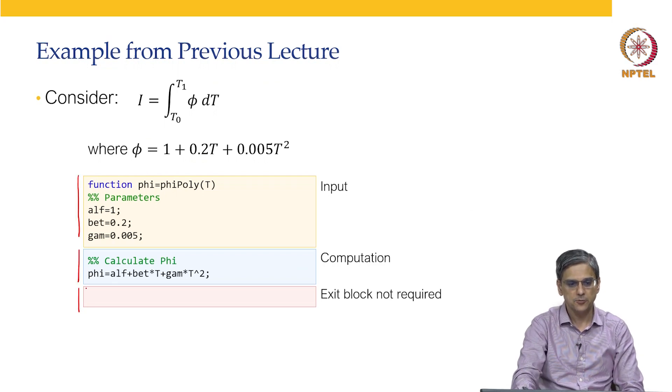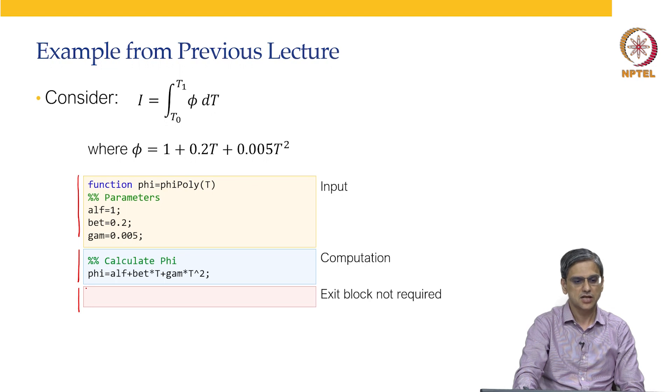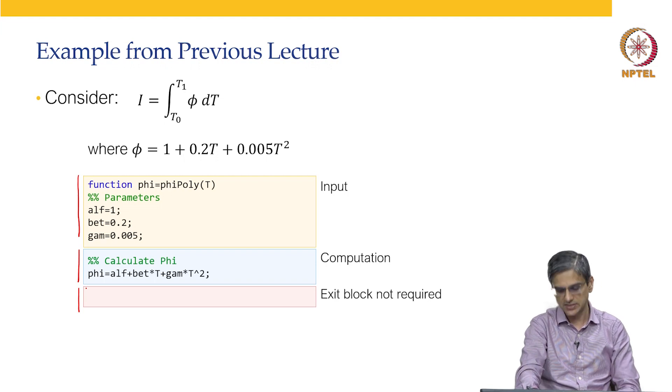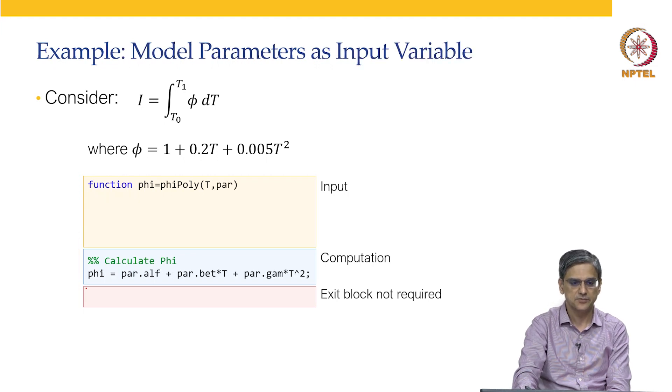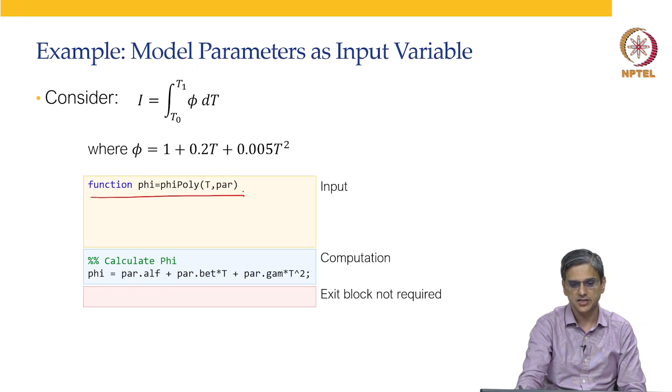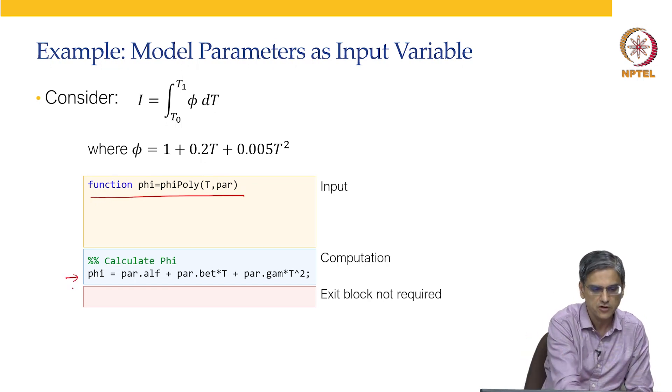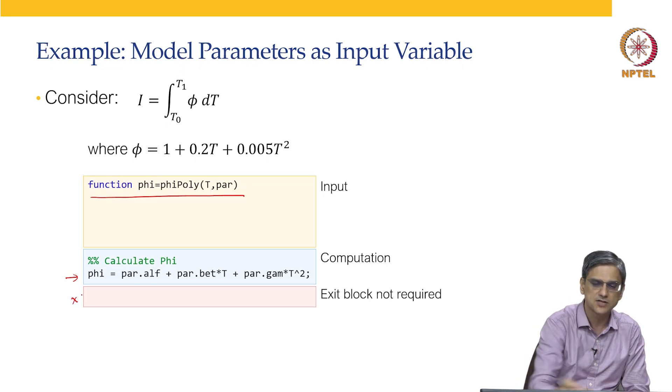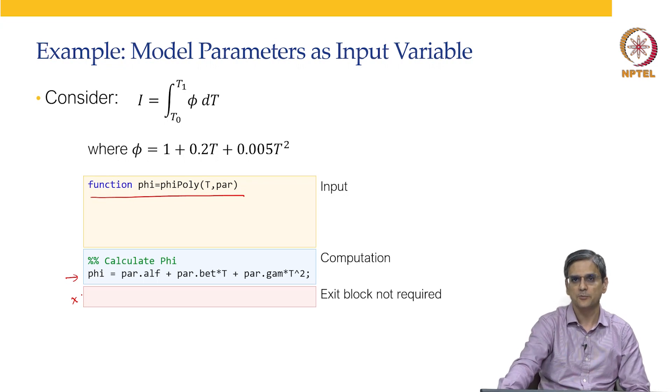In this particular example, the input block contains the definition of the parameters. The computation block contains nothing but computing the value of phi. There is no exit block over here because this is a relatively simple function. What if you are passing on parameters as we did in the previous video? If you are passing on the parameter, the input block becomes very simple. Only the function definition goes in the input block. The computation block is also straightforward because you are doing the computation of phi and there is no exit block because there are no other post-processing things that are required in this particular code and your code is fairly straightforward.